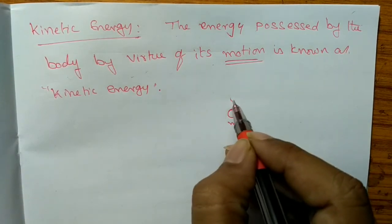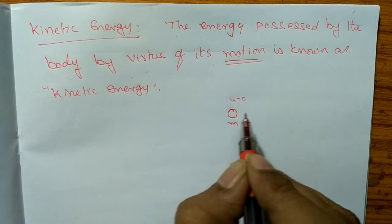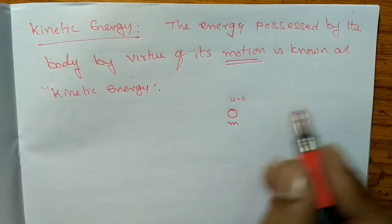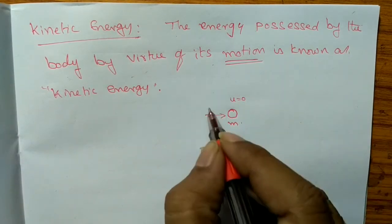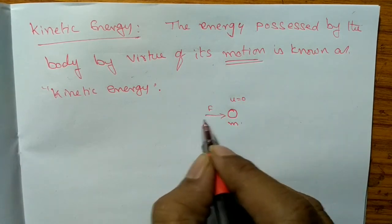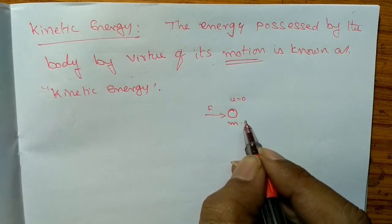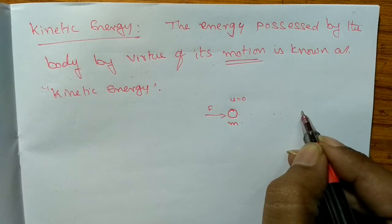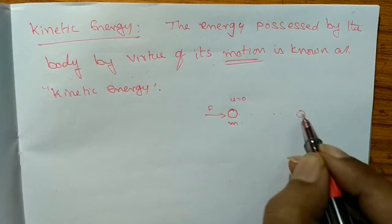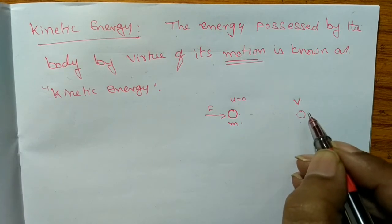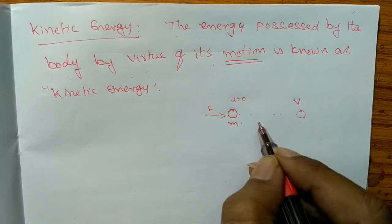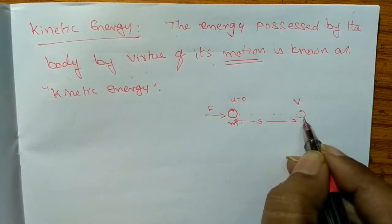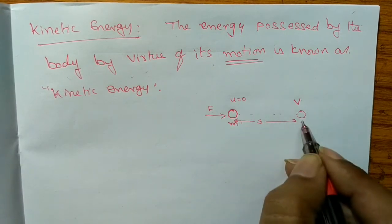Consider a body of mass M. The initial velocity is equal to zero. The body reaches a velocity V. The distance covered by the body is S. This is the rest position, and this is the force causing the displacement.